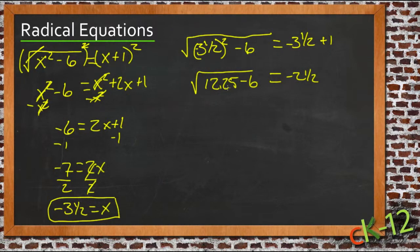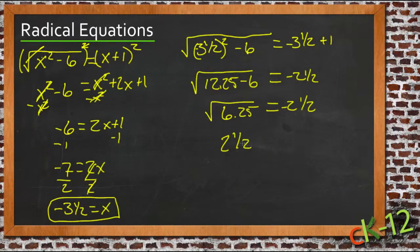Then 12 and a half minus 6 is 6 and a half, so we have square root of 6 and a quarter equals negative 2 and a half. The square root of 6 and a quarter is 2 and a half, so we have 2 and a half or negative 2 and a half equals negative 2 and a half.